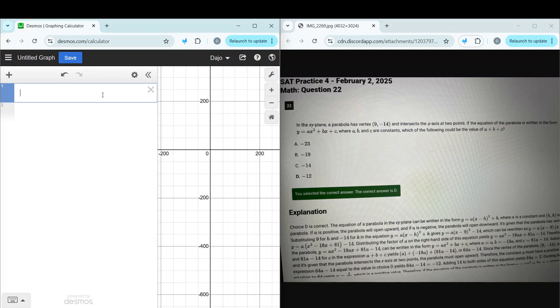Anyways, let's get into it. In the xy-plane, a parabola has vertex (9, -14) and intersects the x-axis at two points. If the equation of the parabola is written in the form y = ax² + bx + c, where a, b, and c are constants, which of the following could be the value of a + b + c?